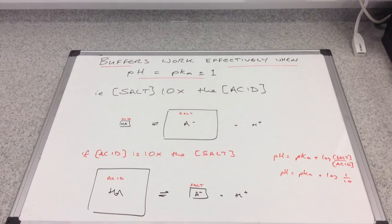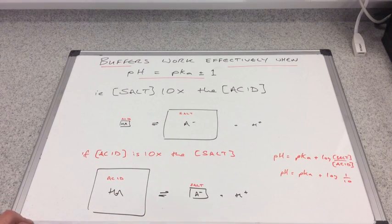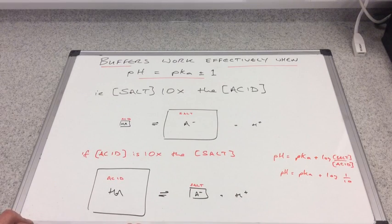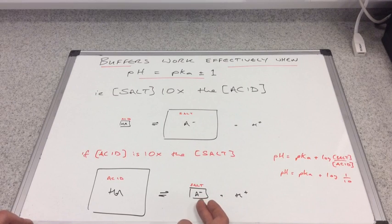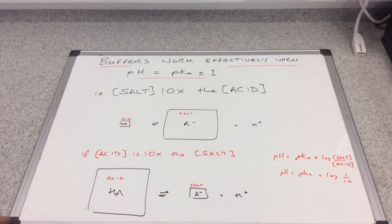Again you can see that this will struggle but the opposite way around. This will cope fine if you add some base to this because we're going to lower the H+. We've got a nice big reservoir of acid to dissociate and replace the H+. But if we add acid to this, there isn't very much salt ion to react with the extra acid that's gone in, so it's going to struggle to shift over to the left.